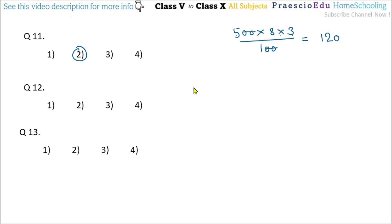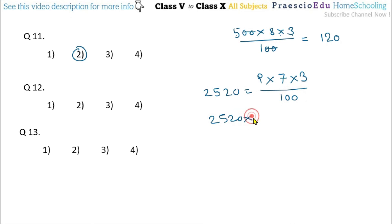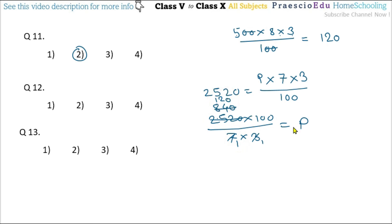Question number 12: Rohit received interest of ₹2520 at the rate of 7% per annum after 3 years. Find the principal. So 2520 = P × 7 × 3 / 100. Rearranging: P = 2520 × 100 / (7 × 3) = 252000 / 21 = 12000. The principal is ₹12,000 — option number 4.